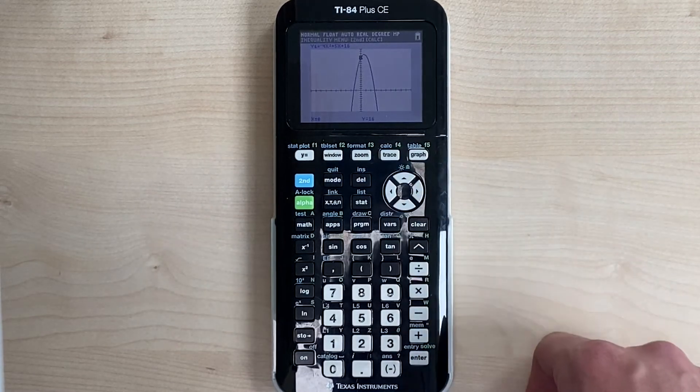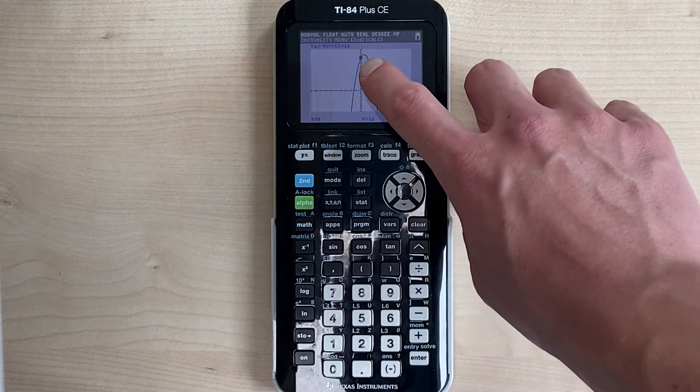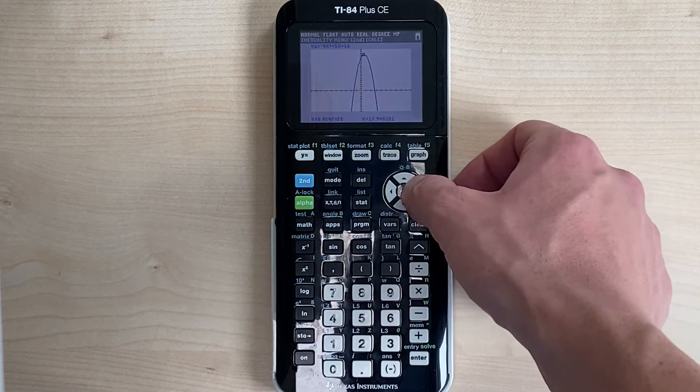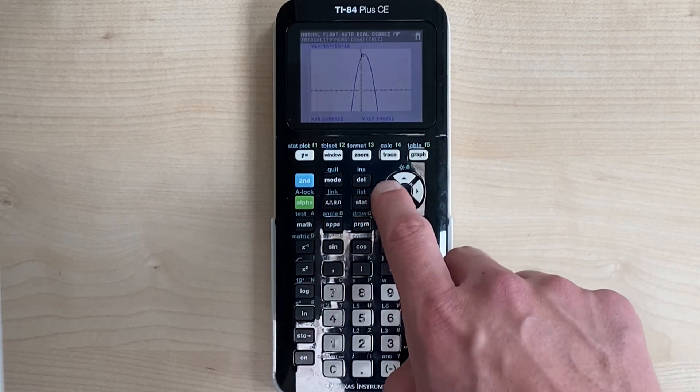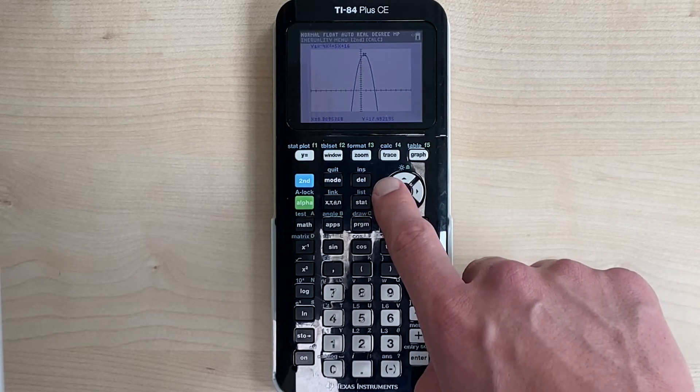So trace, once again, it does what it sounds like. So when you hit trace, you get this little cursor that flashes on your screen. And you can move this cursor with your left and right directional keypad to look at different x and y values that are on your parabola.